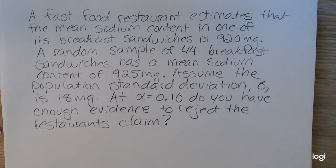In this problem, a fast food restaurant estimates that the mean sodium content in one of its breakfast sandwiches is 920 milligrams. A random sample of 44 breakfast sandwiches has a mean sodium content of 925 milligrams. Assume the population standard deviation sigma is 18 milligrams. At alpha equal 0.10, do you have enough evidence to reject the restaurant's claim?